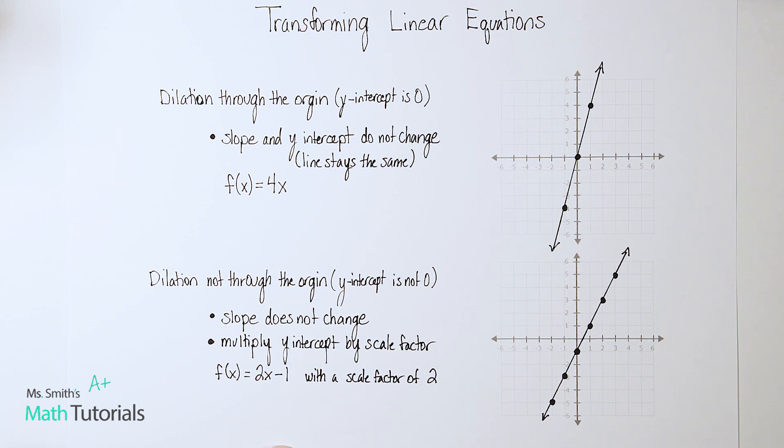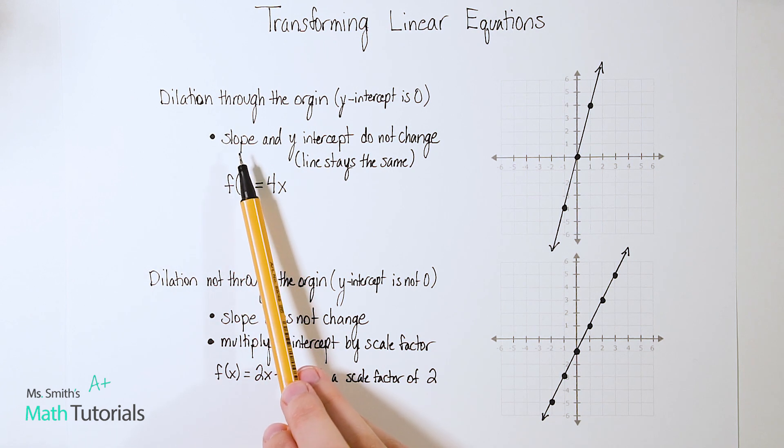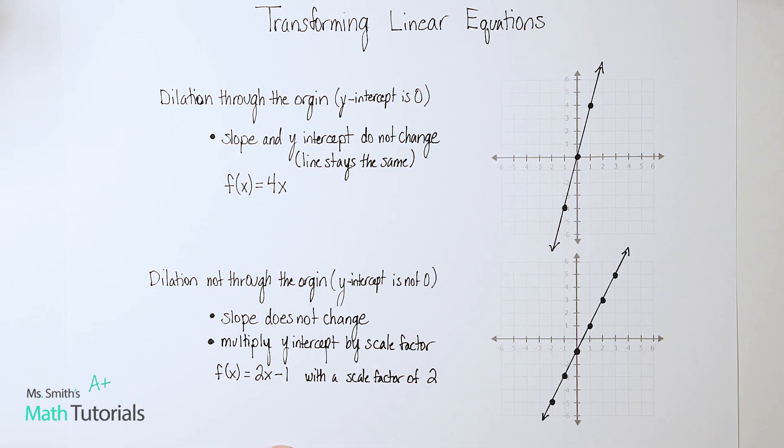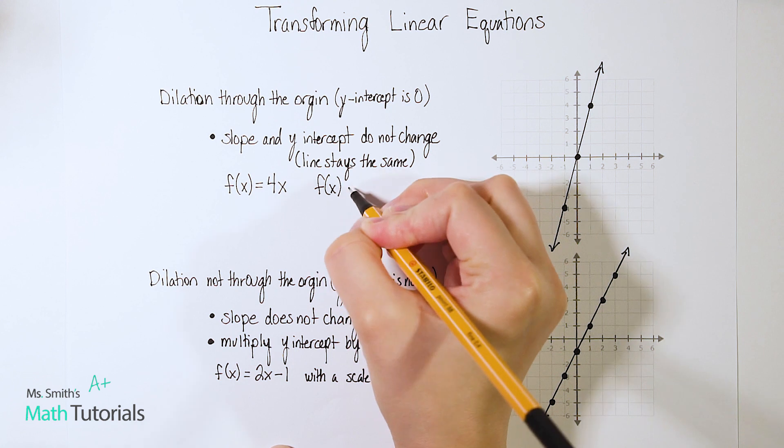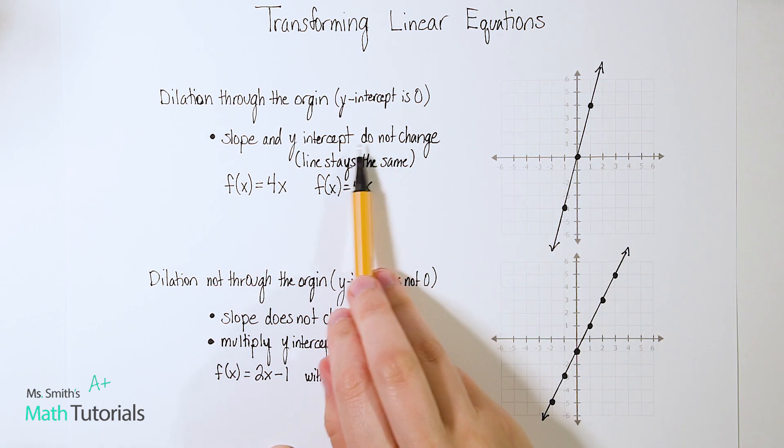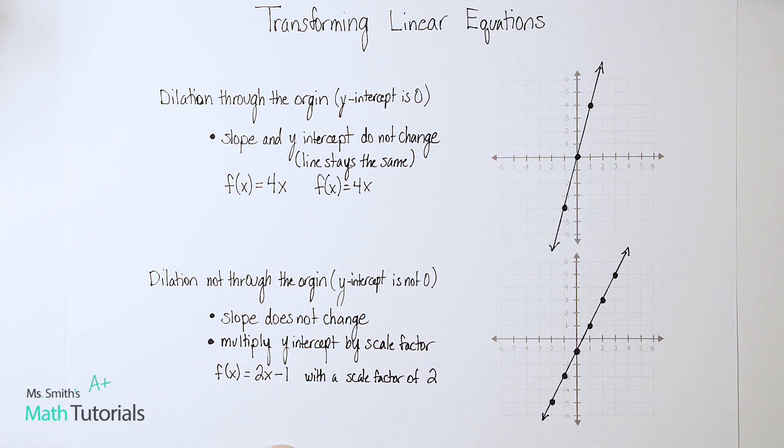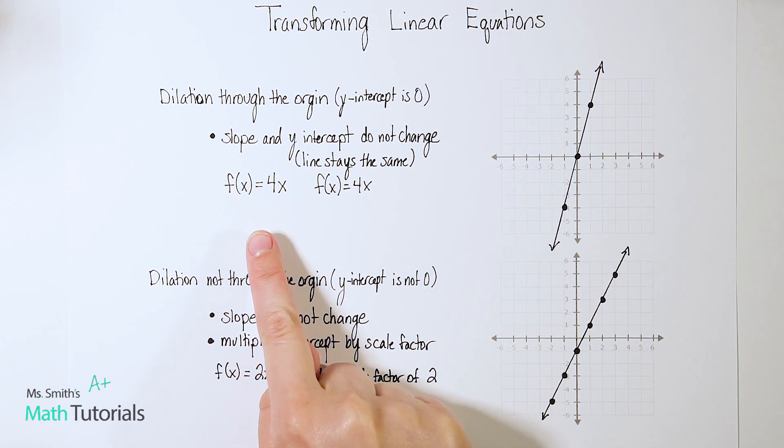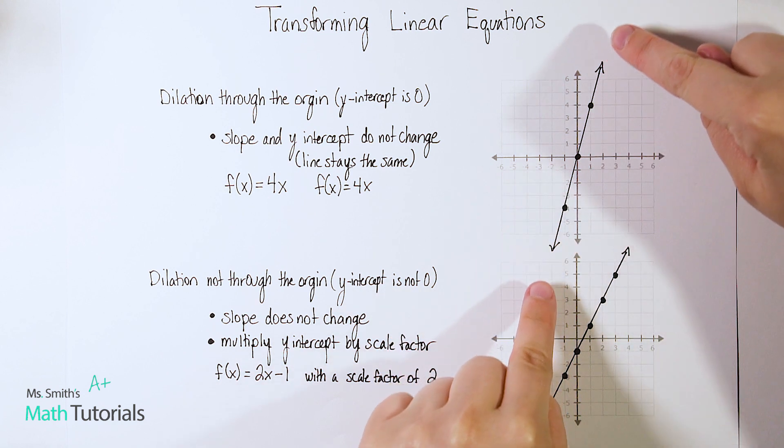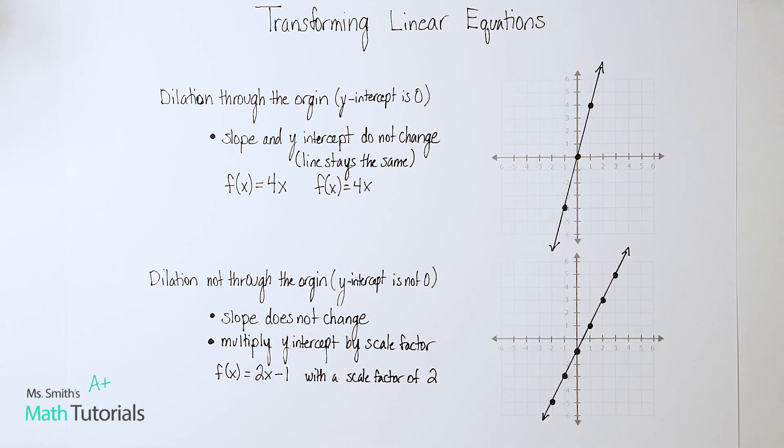So what would happen if you dilated through the origin? Now, it doesn't matter what I dilate by. I could dilate by two, one half, four, it doesn't matter. No matter what you're dilating by, the slope and the y-intercept do not change. So if I wanted to take this line and dilate it by anything, I would have the exact same line. Because I wouldn't change my slope, my slope would still be four. And I wouldn't change the y-intercept, it would still be zero. So essentially, what would happen is if I tried to graph a dilated version of this, it would just fall along the exact same line, the points would just kind of stretch out. So no change there.